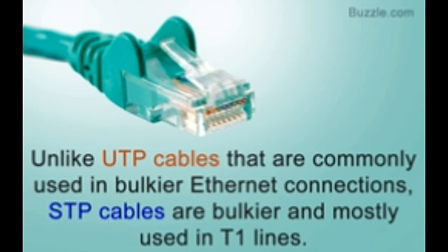Factors like signal attenuation and external interference contribute to the loss of signal power. Since time immemorial, engineers have been trying to establish communication networks of acceptable standards with minimum losses, and for this, they have been experimenting with different types and various combinations of electrical cables. It was concluded that an electrical signal traveling through a cable containing pairs of twisted wires is less susceptible to electromagnetic influence, also known as crosstalk, than one that travels on a different kind of cable.